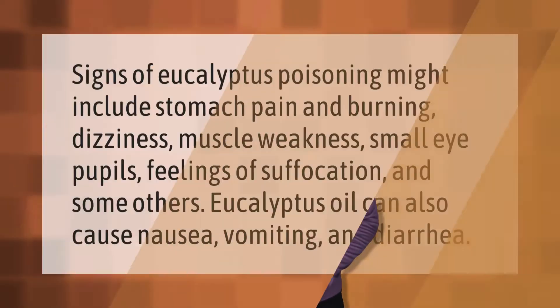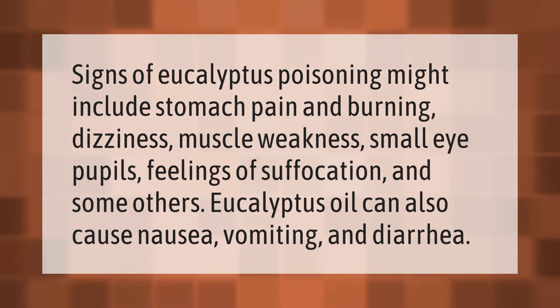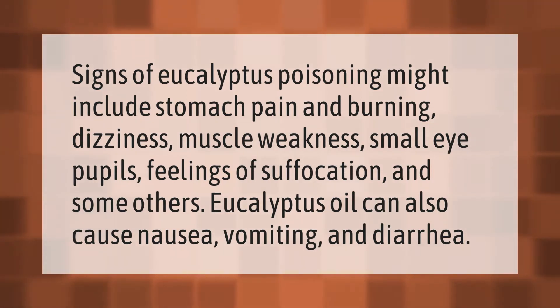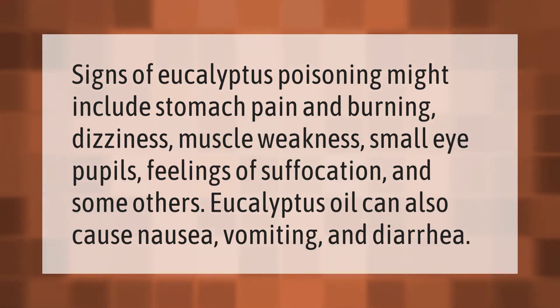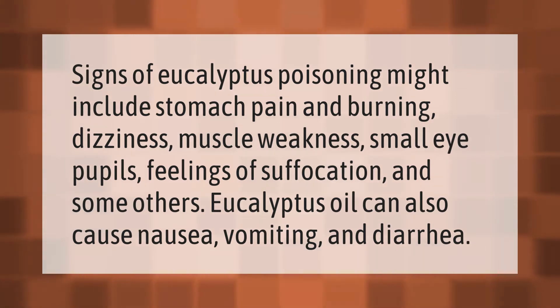Signs of eucalyptus poisoning might include stomach pain and burning, dizziness, muscle weakness, small eye pupils, feelings of suffocation, and some others. Eucalyptus oil can also cause nausea, vomiting, and diarrhea.